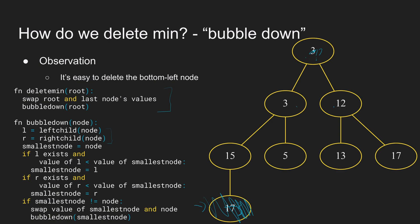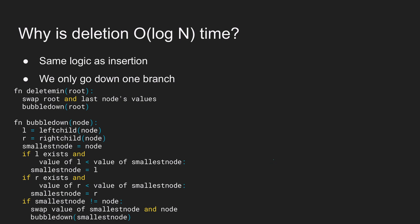Let's look at the pseudocode. It swaps the root and last node's values, then bubbles down from the root. It finds the left and right child, then finds the smallest value out of the current node, the left child, and the right child (if they exist). If the smallest node is a child rather than the current node, we swap and bubble down again. In our example: 17 swaps with 3, then 17 swaps with 5, and we're done because there are no children. The time complexity argument is the same as insertion — we only go down one branch, doing constant time work per level, so it's O(log n).